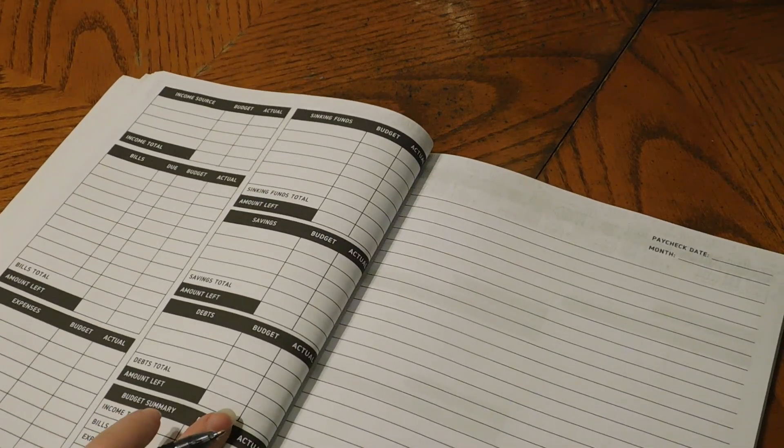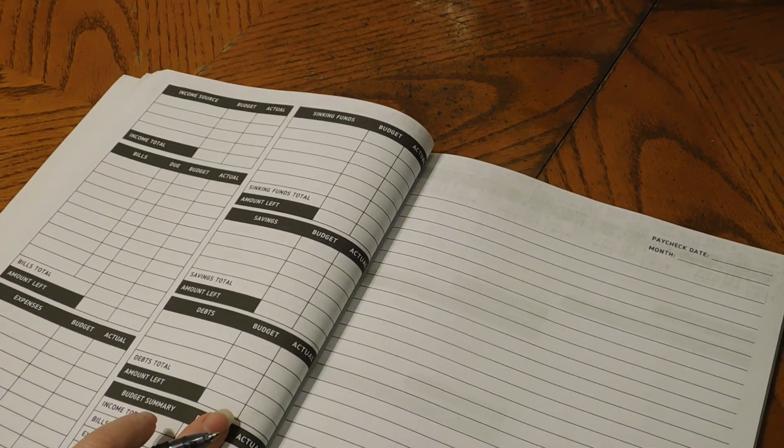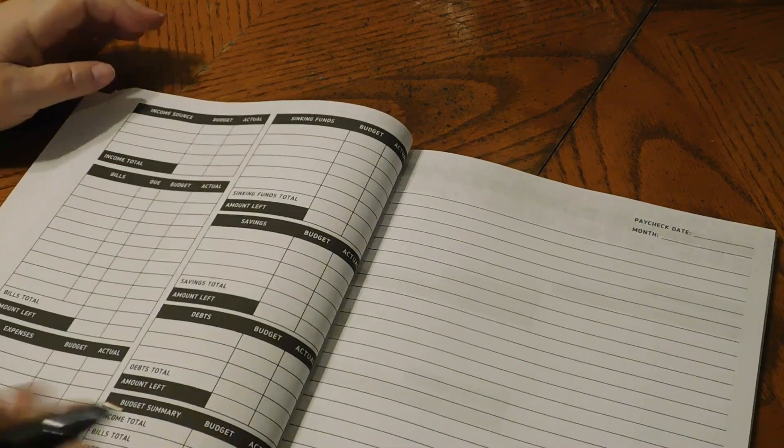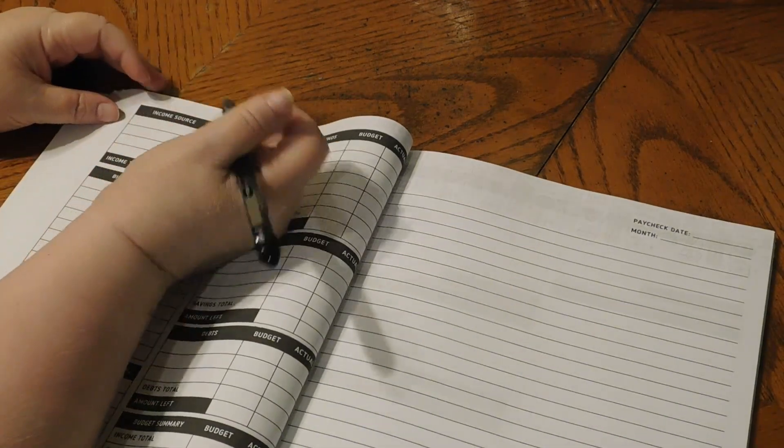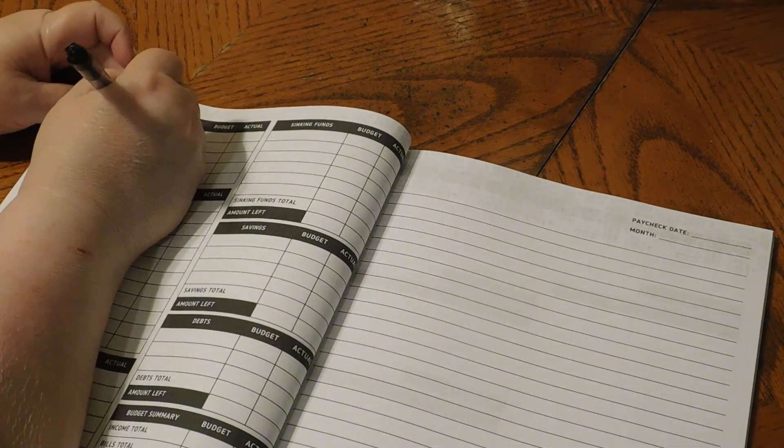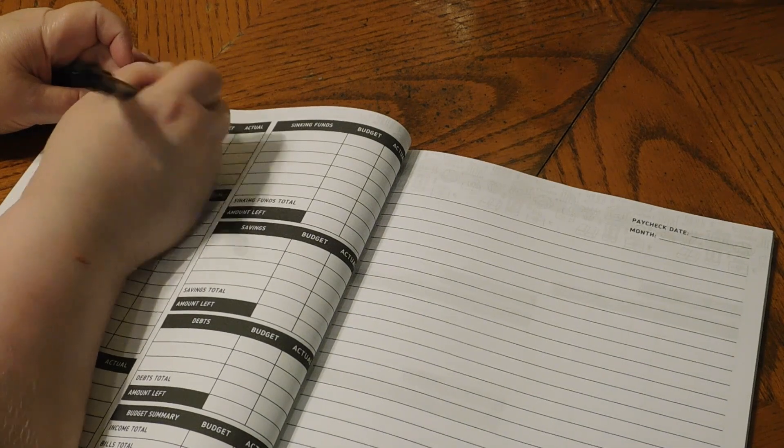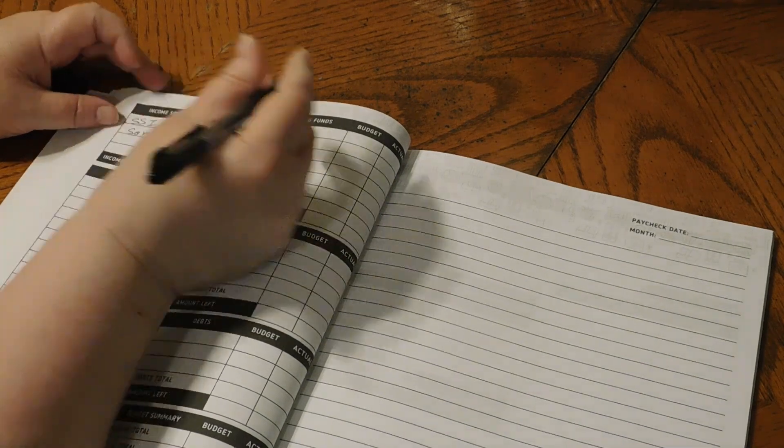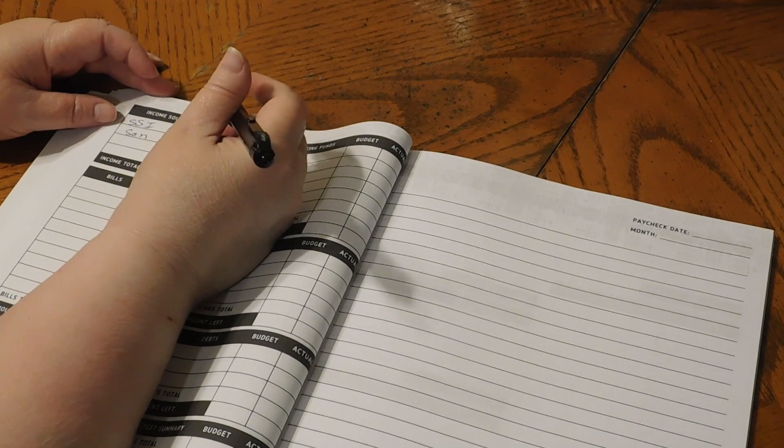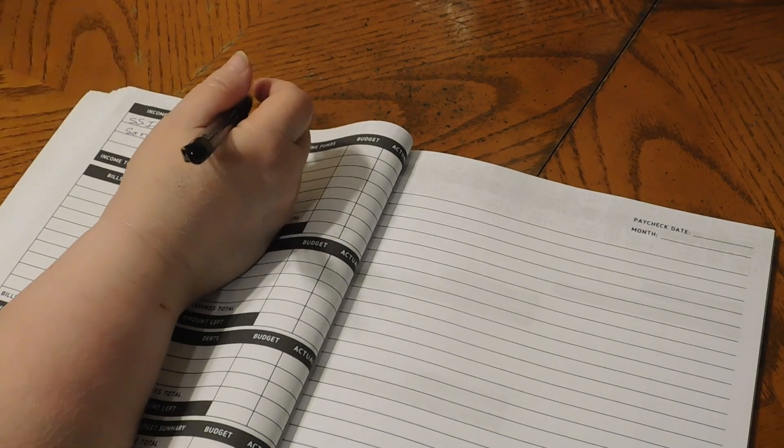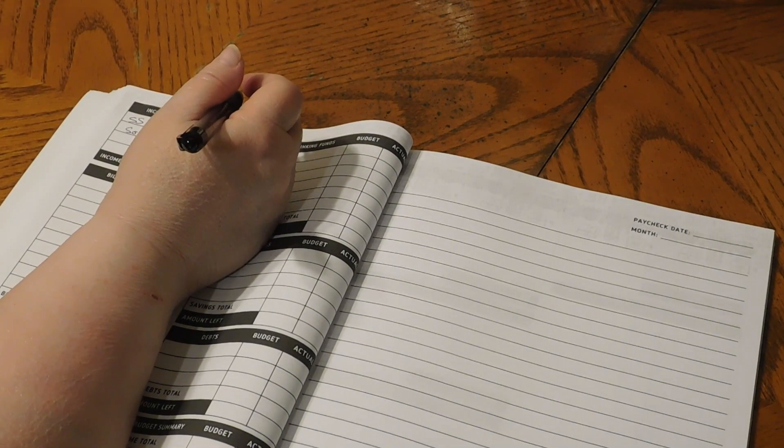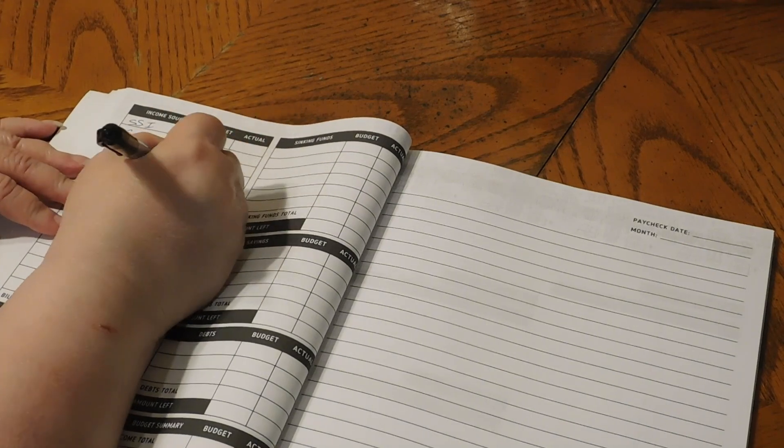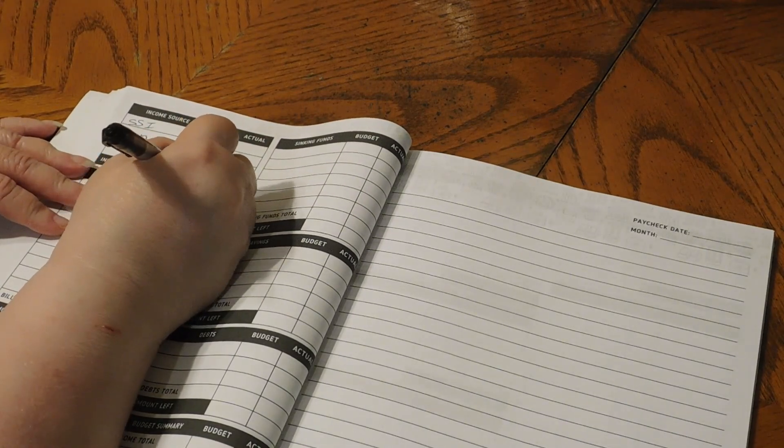I can't believe we're less than a week away from June 1. So we are expecting, this is for my husband's SSI and then our son gives us money. $1,835 is what we are looking at.